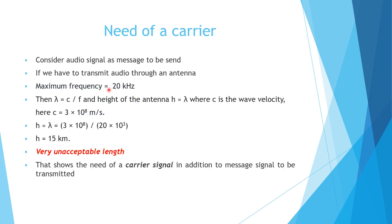Why do we need a carrier? Consider transmitting an audio signal whose maximum frequency is 20 kHz and minimum is 20 Hz. If we transmit audio through an antenna, using the equation λ = c/f, the antenna height h equals λ. For 20 kHz, the height works out to 15 kilometers — a very impractical length. This shows the need for a carrier signal of high frequency and more power.